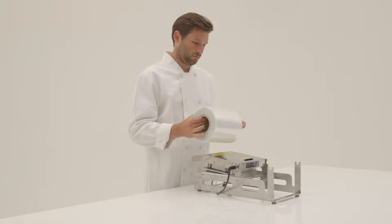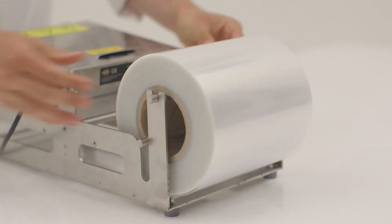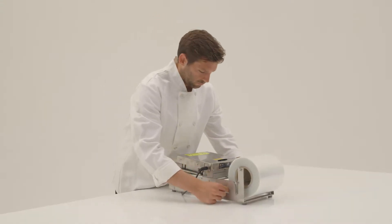To get started with the 539S, insert the film holder in the reel and place it on the rear of the machine. It is important to feed the film from the top of the reel.